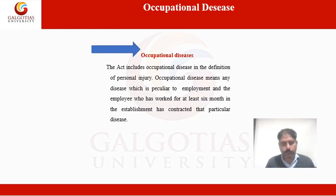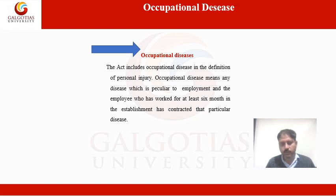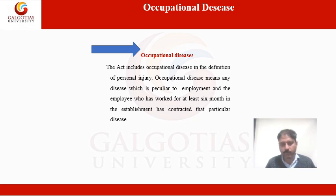There are certain diseases which are peculiar to a particular employment — workers doing a particular job are most likely to get infected by that particular disease. The Employees' Compensation Act includes occupational disease in the definition of personal injury. Any disease which is peculiar to the employment, and where the employee has worked for at least six months in that employment and contracted that particular disease, is entitled to compensation under this Act. The list of occupational diseases has been given in the schedule of this Act.